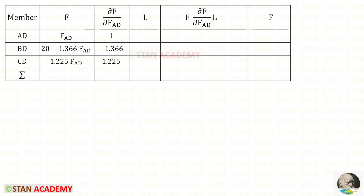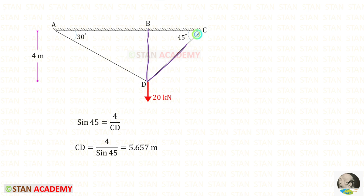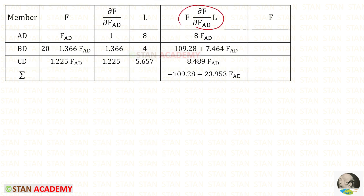Then we have to enter the length of the members. The length of BD is given in the question as 4 meters. Taking the relevant triangle, sin 30 equals the opposite side 4 meters upon the hypotenuse AD, giving AD = 8 meters. Taking the other triangle, sin 45 equals the opposite side 4 meters upon the hypotenuse CD, giving CD = 5.657 meters. Then we multiply these three terms to get the products, and add the three results.